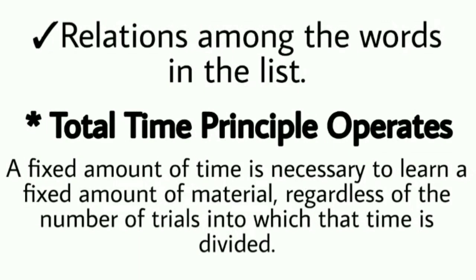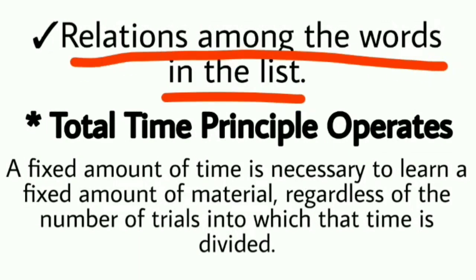Phir hai relations among the words in the list — matlab agar words ek doosre se kisi na kisi way mein relate karte hain toh unhe learn karna easy ho jaata hai, in comparison to unrelated words. Jaise learners ko wooden material ki list di jaaye — table, chair, bed — toh ye yaad karna easy hoga un words se jo alag-alag class ya category ke honge, jaise parrot, lamp, ball, apple. Toh ye saare determinants hain jo verbal learning ko influence karte hain.